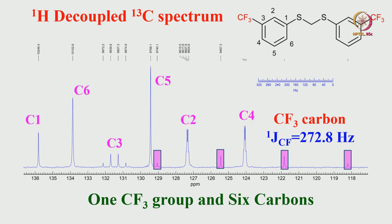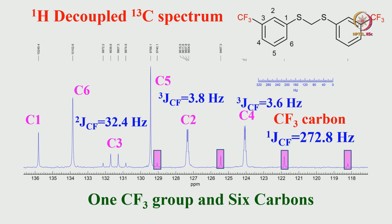I can confidently assign that quartet as C3. Carbons C2 and C4 are each separated by three bonds from fluorine. They are again quartets due to three-bond C-F coupling. Each is expanded here—you can see four peaks with a 1:3:3:1 pattern. The three-bond C-F coupling is approximately 3–4 Hz, very small and not well resolved, but the quartet structure is visible in both. So C2 and C4 show three-bond coupling and C3 shows two-bond coupling. The assignment is now clear.